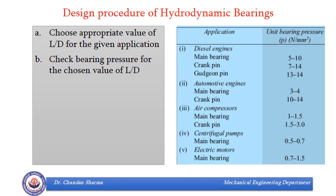The very first step is to choose an appropriate value of L/D for the given application. In many books we have been given reference values of L/D for different applications. L/D equal to 1 is called a square bearing, L/D greater than 1 is a long bearing, and L/D less than 1 is a short bearing. We can choose L/D as 1 because it is close to the optimal value — neither too low nor too high. The correct value of L/D is decided by the bearing pressure.